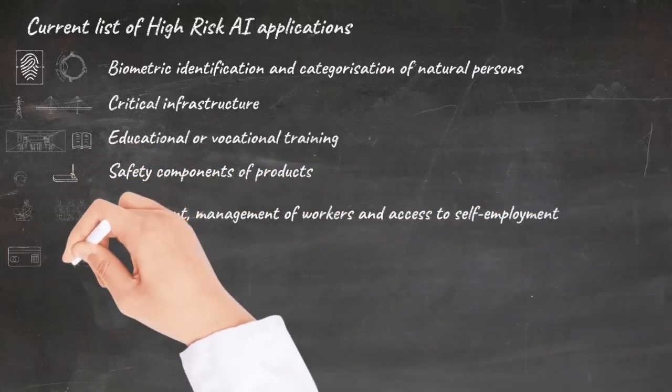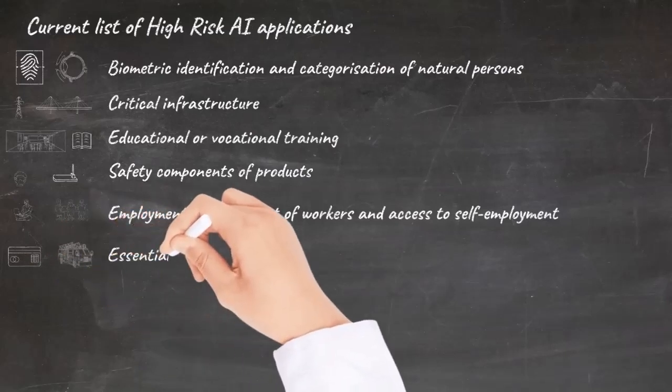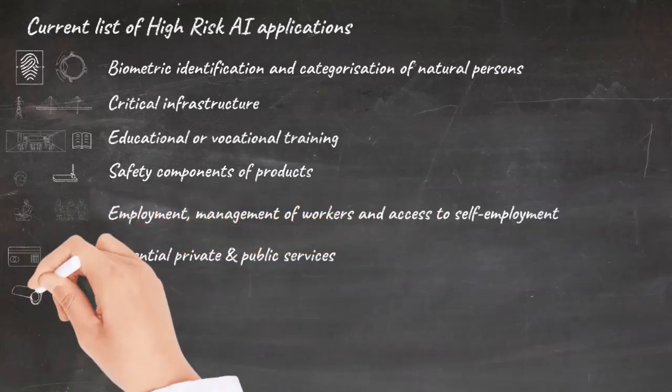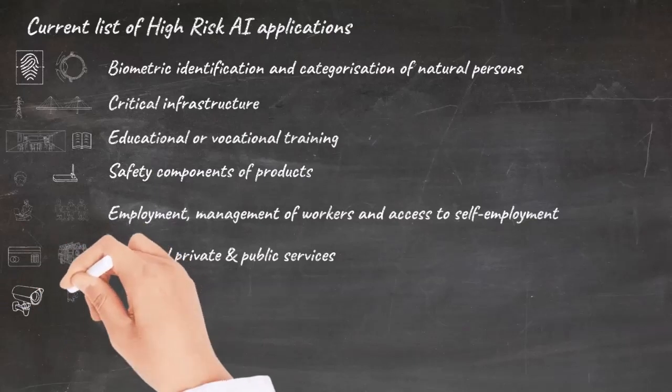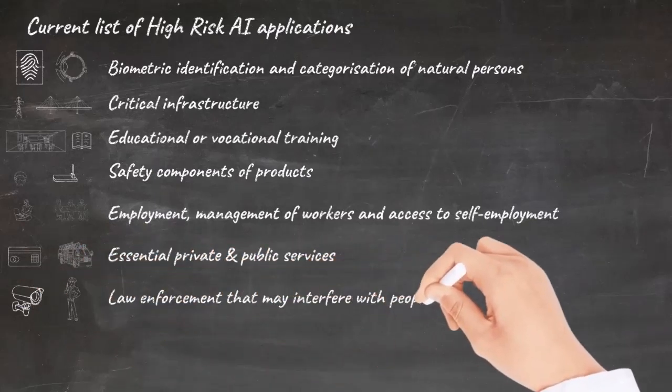Essential private and public services. For example, credit scoring denying citizens opportunity to obtain a loan, or AI systems that influence the deployment of emergency services like fire engines or ambulances.